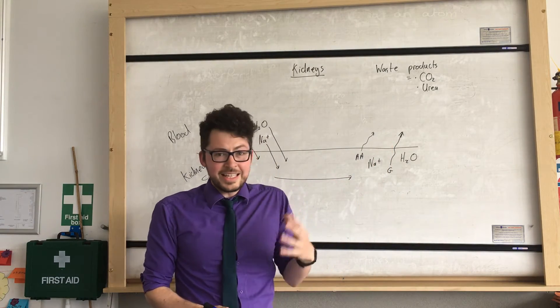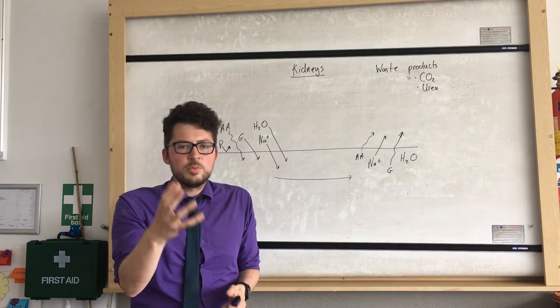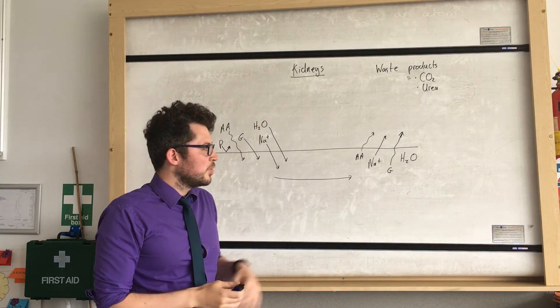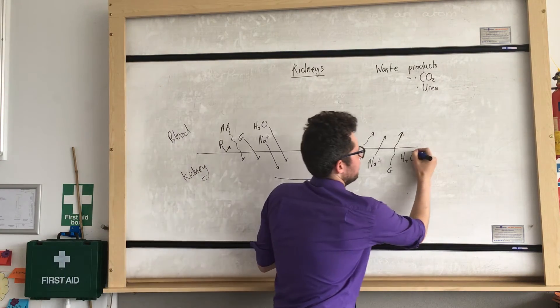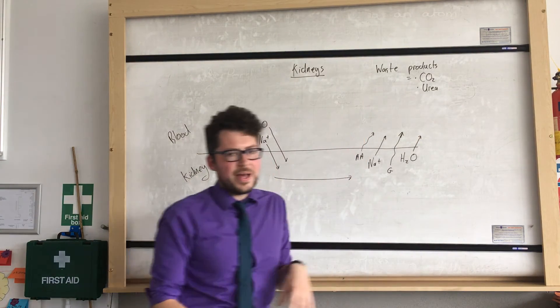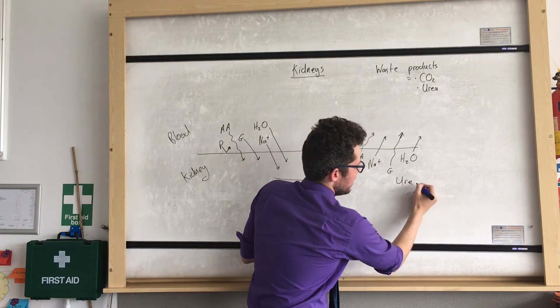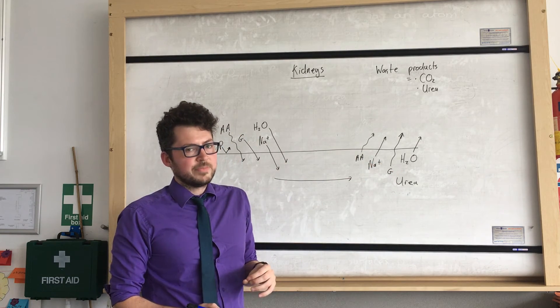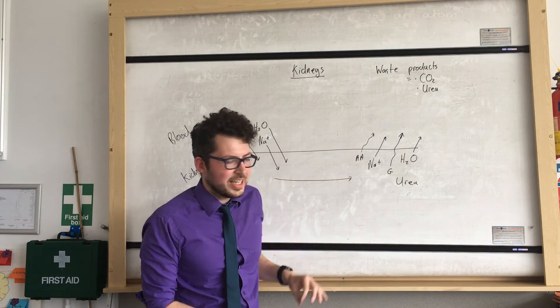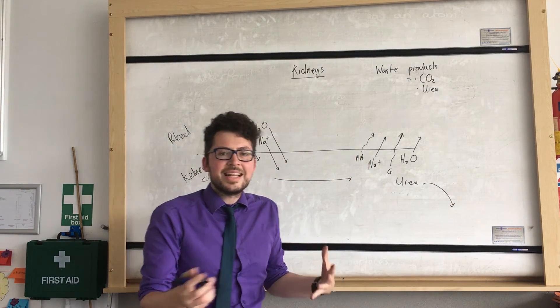The amount of salts that we need is reabsorbed. So not all of the salts - our body will know the amount it needs to reabsorb back into the blood. And also the amount of water we need will be reabsorbed back into the blood. So all that should be remaining is some urea and some water and some salts that aren't reabsorbed. And all of these products left in the kidney will then go to the bladder and then be released as urine.